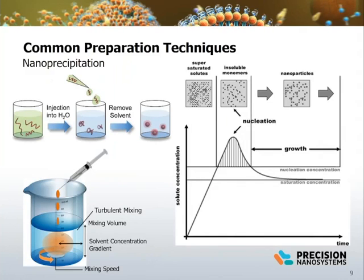Among traditional methods of nanoparticle preparation, the solvent displacement method, or nano-precipitation, is a straightforward process. When a solution of hydrophobic polymer or lipid molecule is dissolved in a water-miscible, polar organic solvent and mixed with a large amount of aqueous buffer at a solid concentration above its thermodynamic solubility limit, supersaturation is reached and the nuclei form spontaneously, followed by nucleic growth by diffusion. This forms nanoparticles.